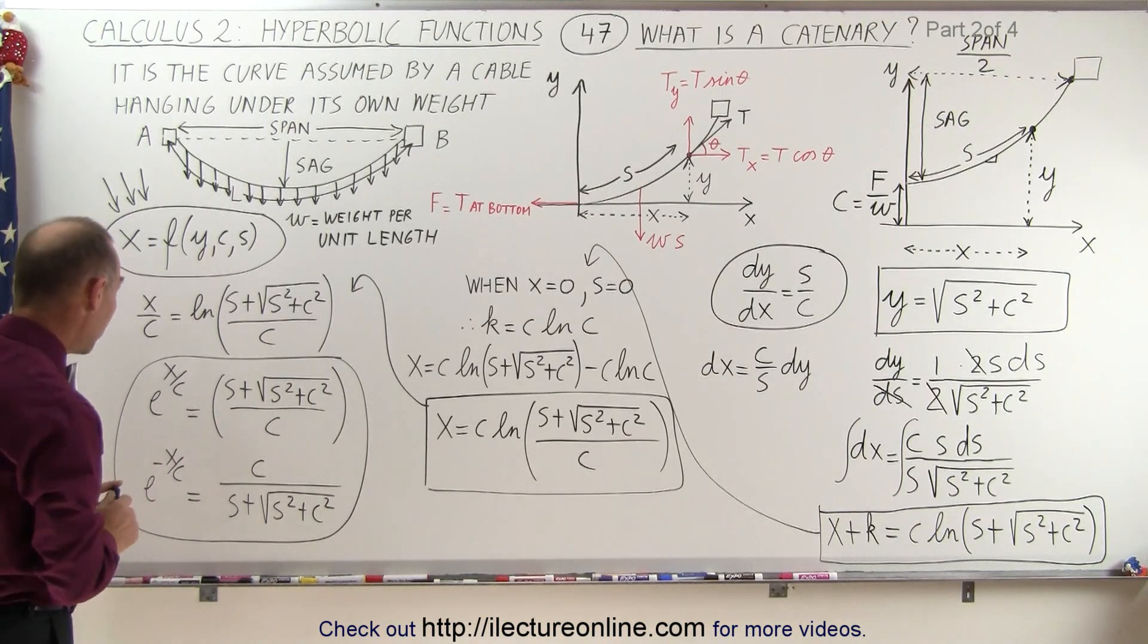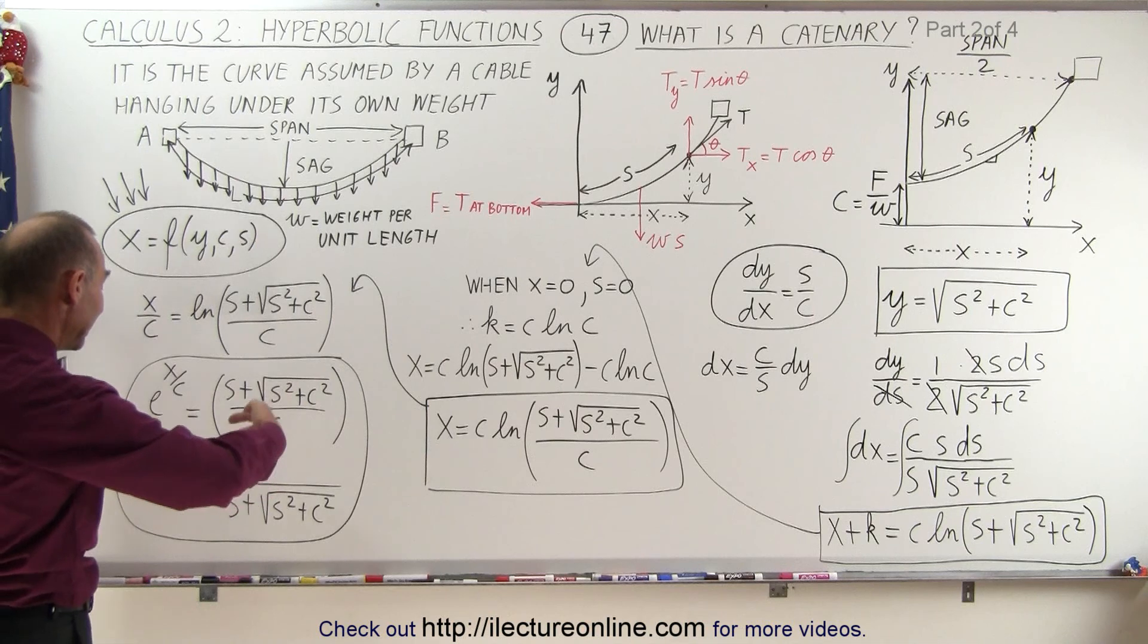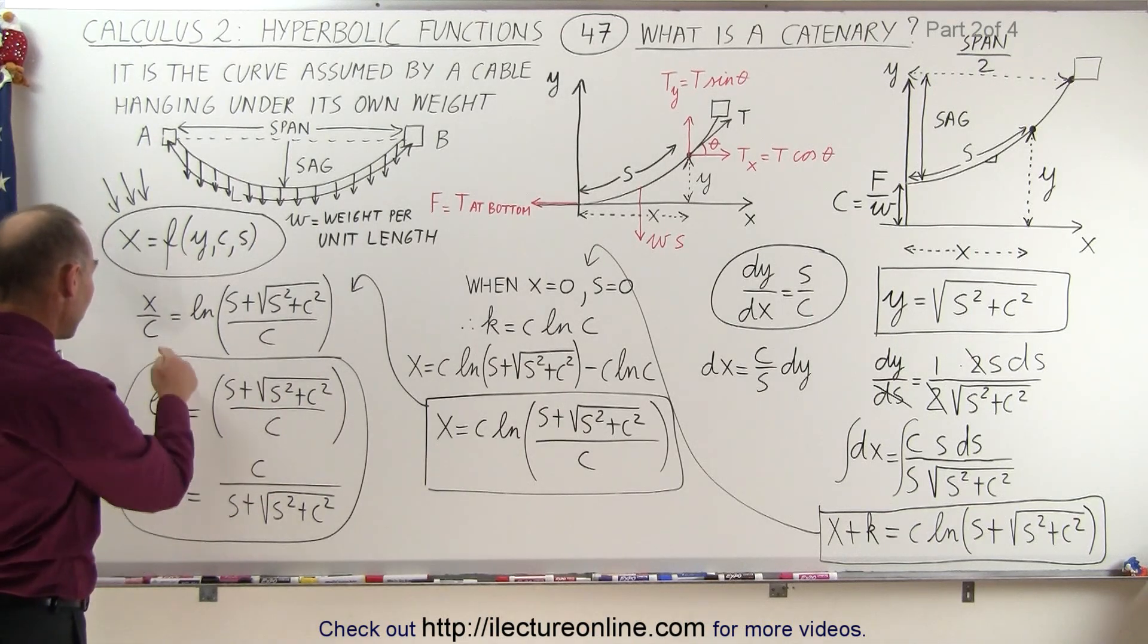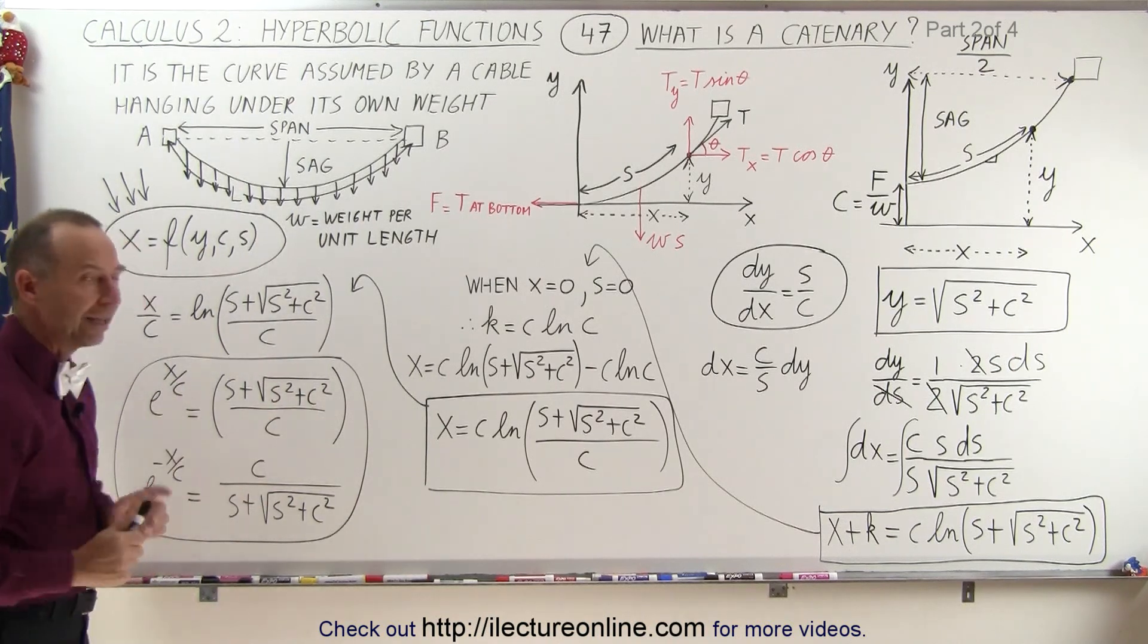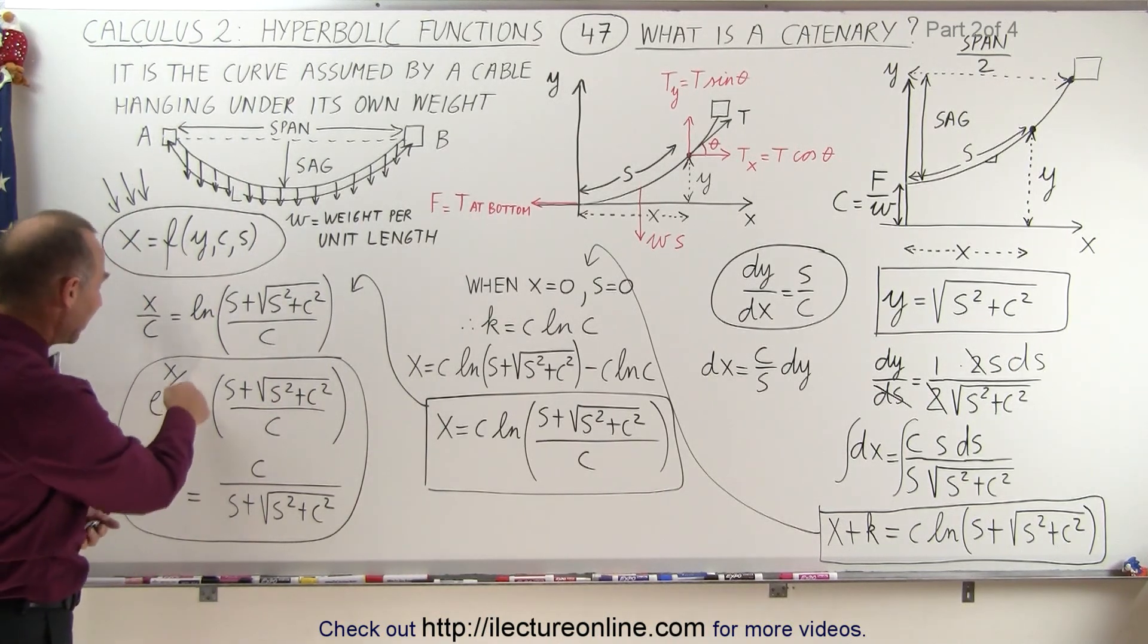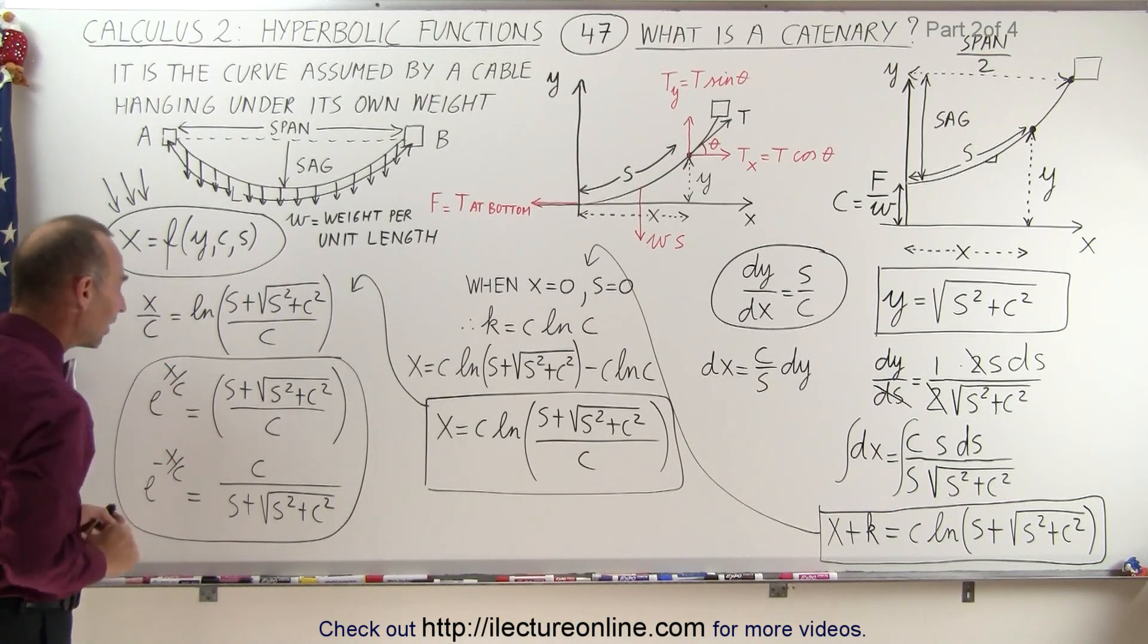And now also what we can do is we have e to the minus x over c. So we still simply take the inverse of that. So now we have one over e to the xc, which is e to the minus xc is equal to the inverse of that. And now notice we have the beginnings of a hyperbolic function, e to the xc and e to the minus xc.